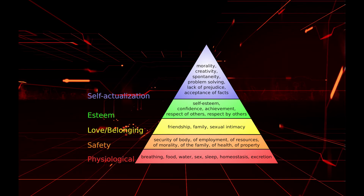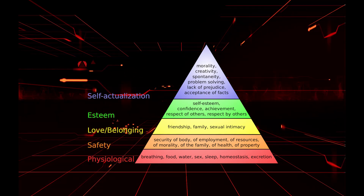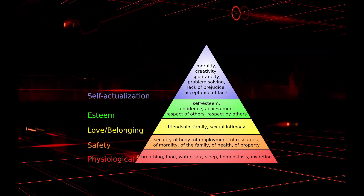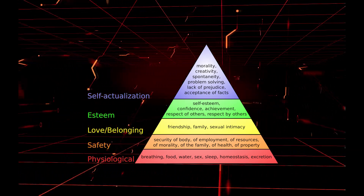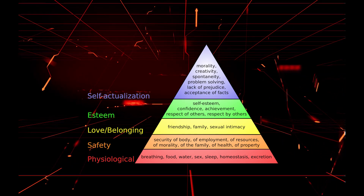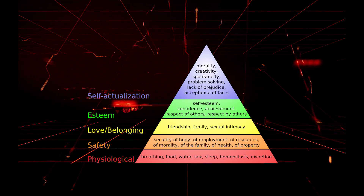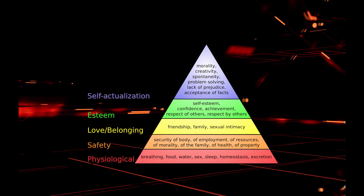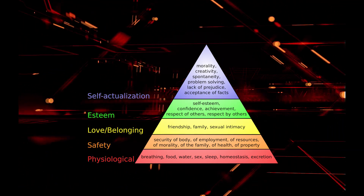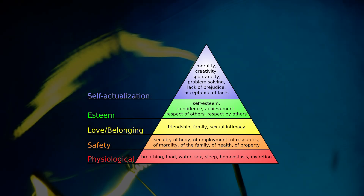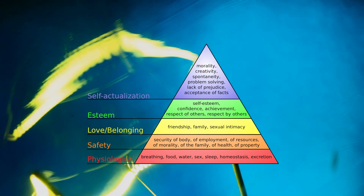And lastly, we have self-actualization. The uppermost tier of the hierarchy is difficult to explain because it means different things to different people. All of the other tiers kind of have a collective element to them, in that a society or collective group can work together to attain those things, whereas self-actualization concerns the self and is much more personal. Essentially, what it means is fulfilling one's purpose — and what that purpose is is entirely up to the individual.